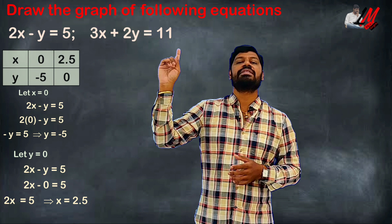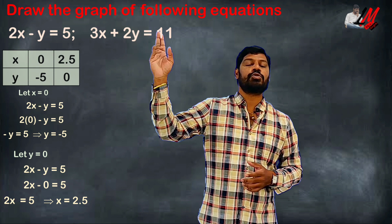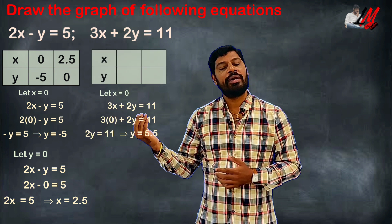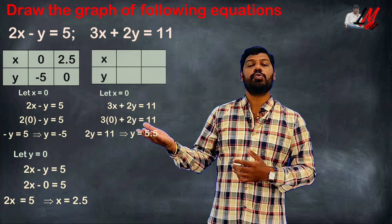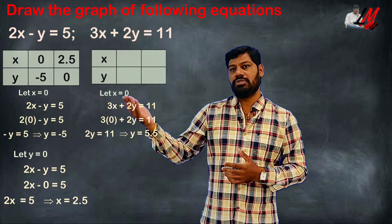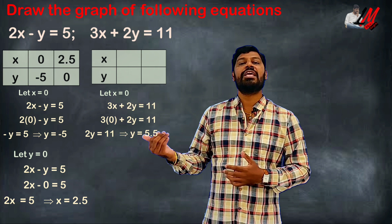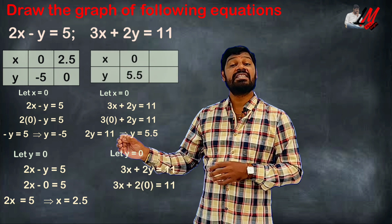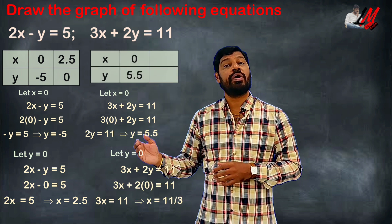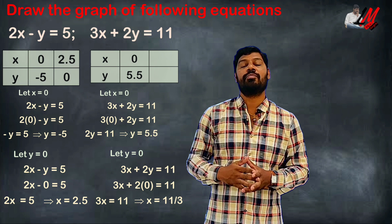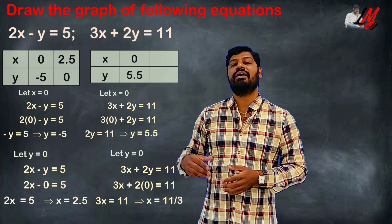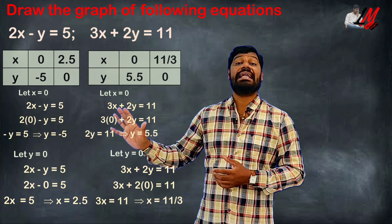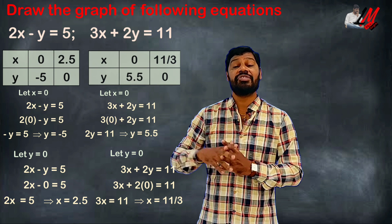Now we do the same for the second equation, 3x plus 2y equal to 11. Let x equal to 0: 3 times 0 plus 2y equals 11, so 2y equals 11, giving y equals 11 by 2. Then let y equal to 0: 3x plus 2 times 0 equals 11, so 3x equals 11, giving x equals 11 by 3.